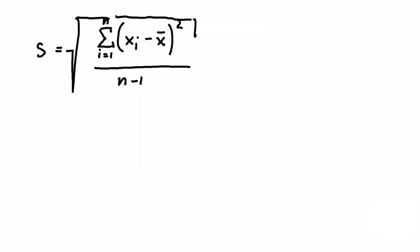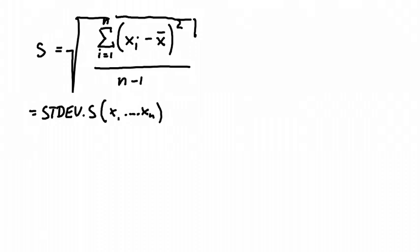That looks a little intimidating, but most calculators can easily do that. In Excel, it would be the function equals STDEV.S with the data x1 to xn. Let's just quickly write it out by hand.